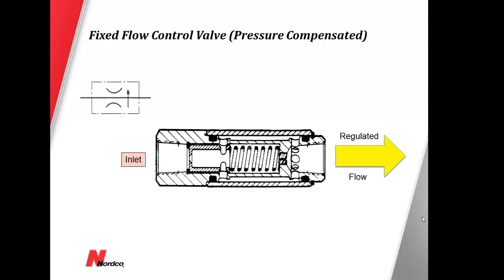Example of a fixed value flow control with pressure compensated control. Pressure compensated simply means the flow control will always try to provide the same regulated flow no matter what the external load is.